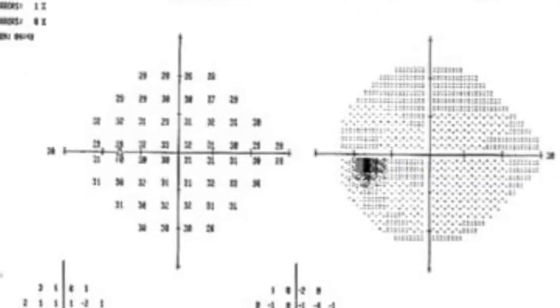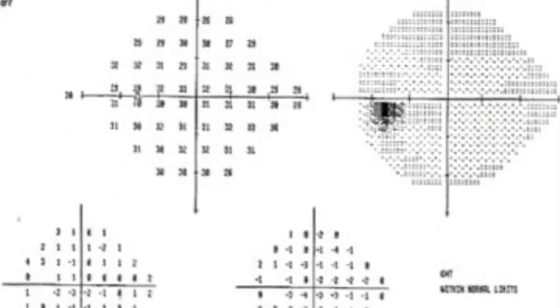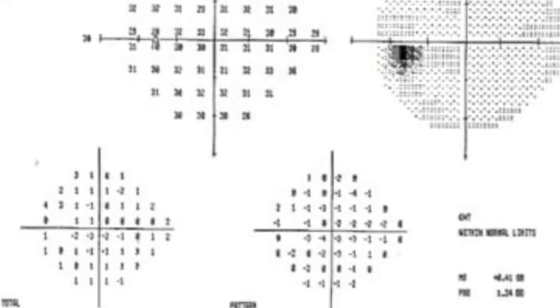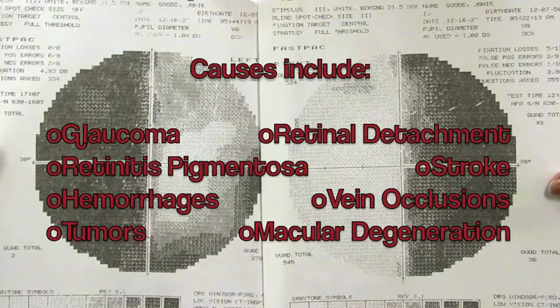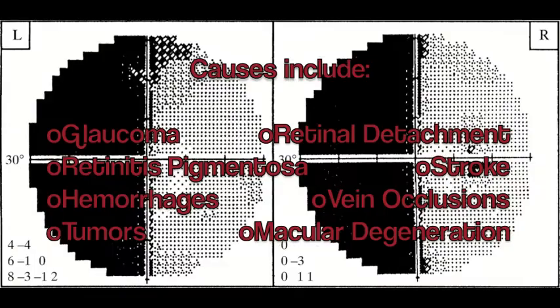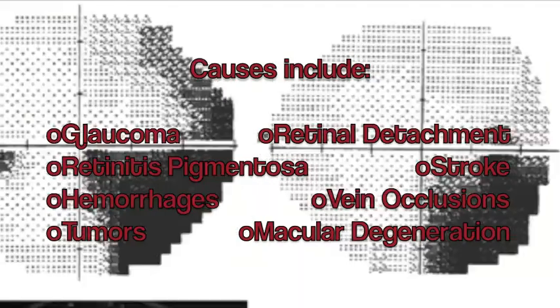After you're done with the test, there's a printout of your results. The results compare how your visual field is compared to someone in your demographic. The different defects can give clues to what the cause might be and also where on the visual pathway the problem is. Also, if you do multiple of these over the course of some years, it can compare them over the years to see if it's getting better or worse.